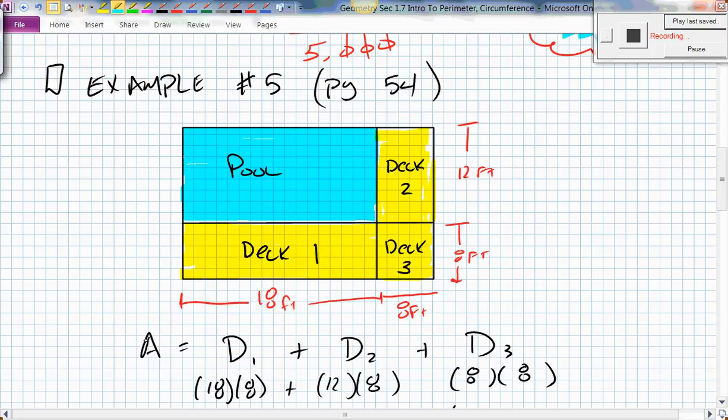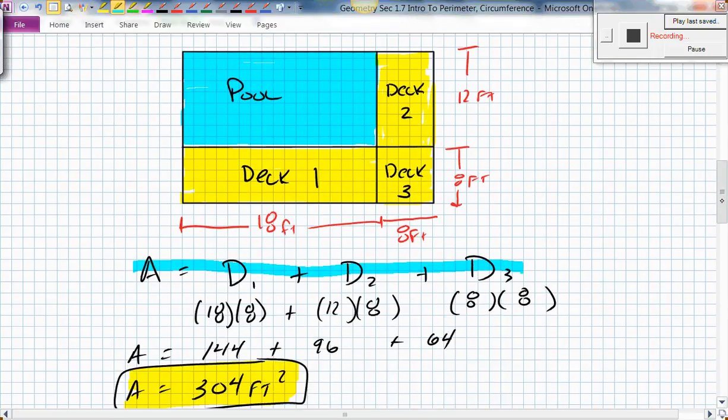So we came up with the formula that the area is going to be deck one plus deck two plus deck three. And they're labeled accordingly up in there in the formula in the problem. So the area for deck number one is 18 feet by 8 feet. So that's what those two numbers come from. And then the area in deck number two was 12 feet by 8 feet.